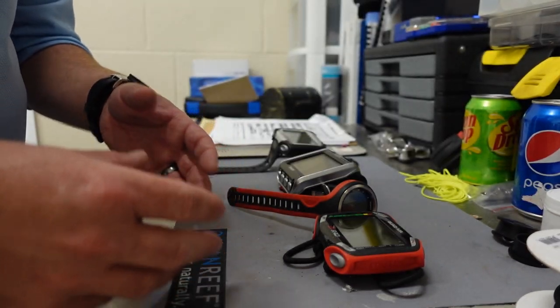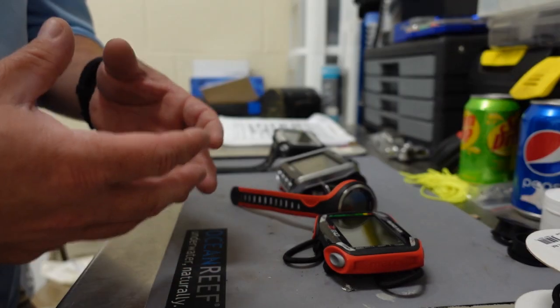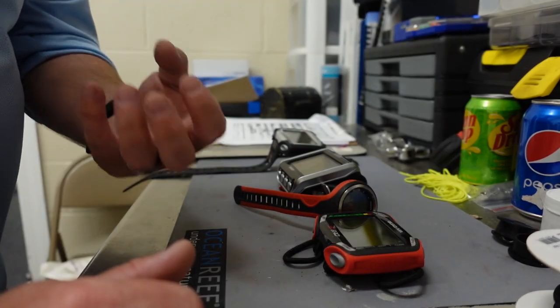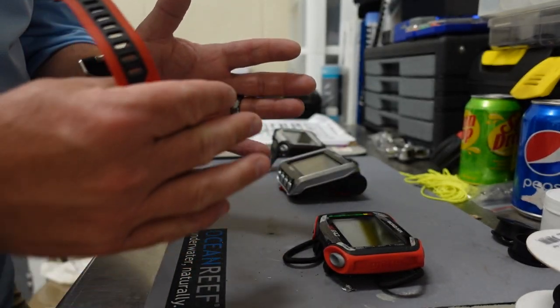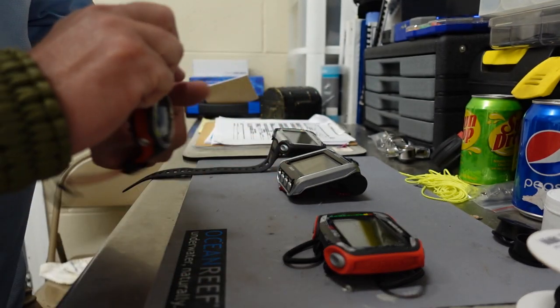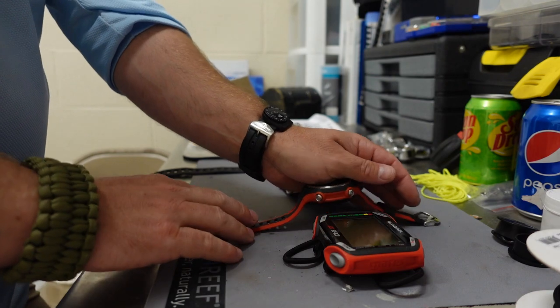As you go deeper and deeper, your suit is going to compress due to the depth or due to Boyle's Law. And I really need some type of depth-compensating strap system. So as my suit compresses, the watch or computer will get tighter. And as the suit expands back out during the ascent phase, it will loosen back up.